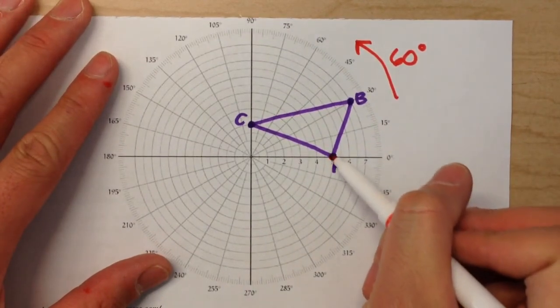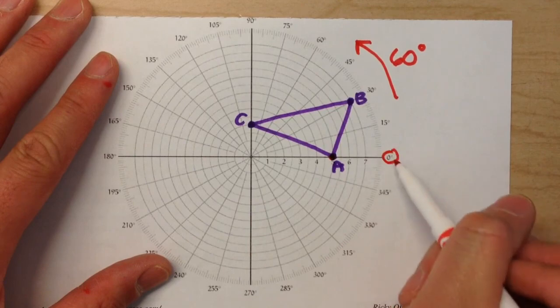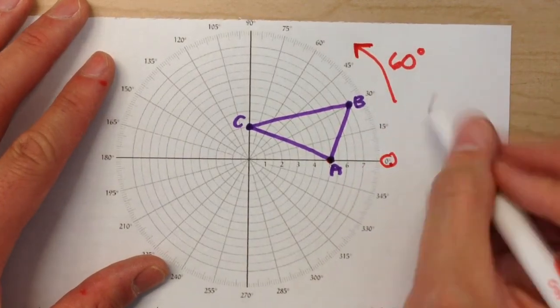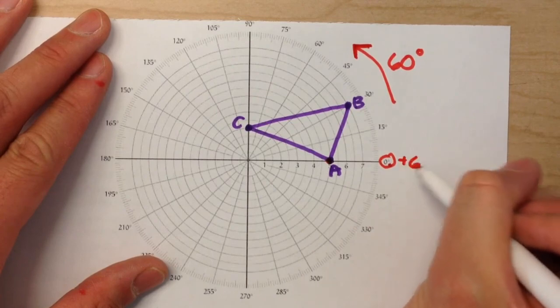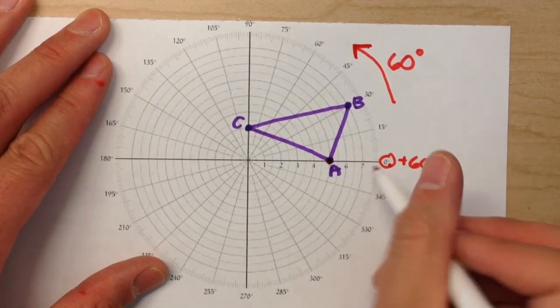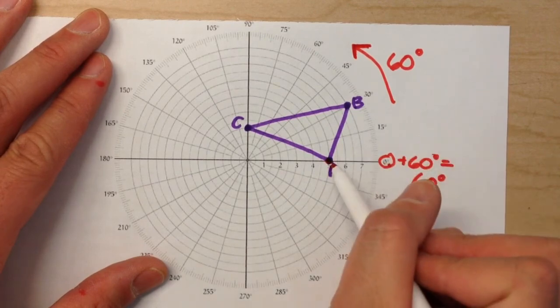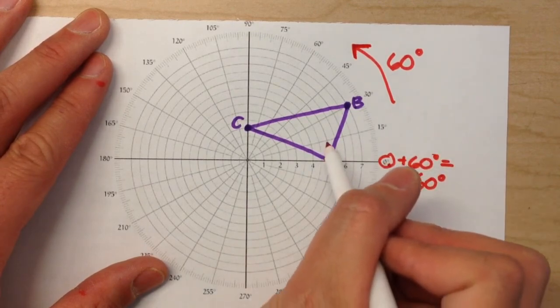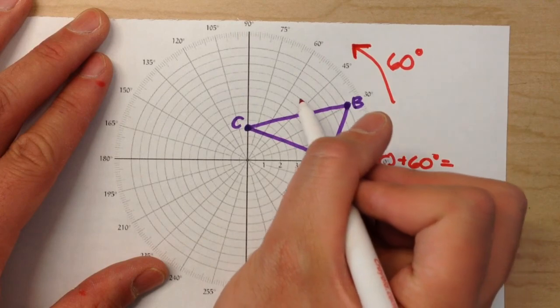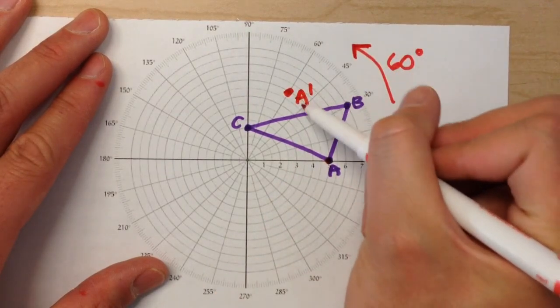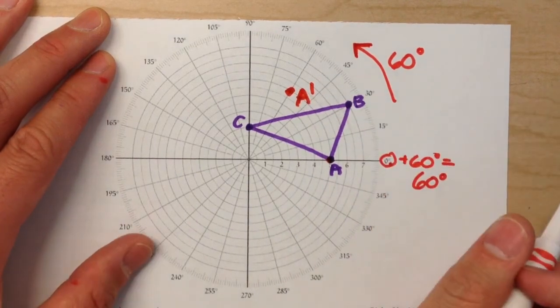Point A is right here at the 0 degree mark. If we're going to rotate it 60 degrees, that means we just need to add 60 degrees to that angle. It should end up at 0 plus 60 is 60 degrees. So follow this line until we get to 60 and plot a point. That's going to be where A prime ends up.